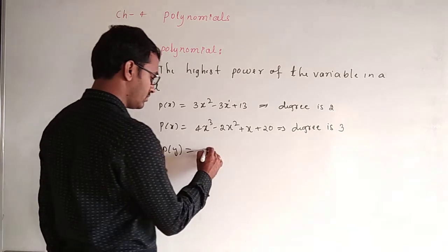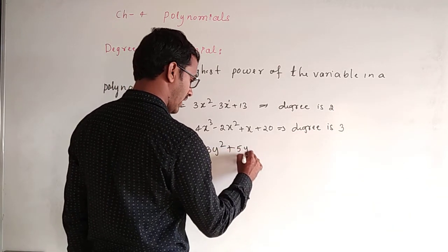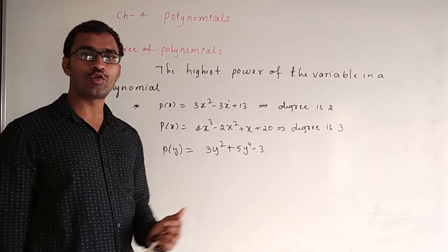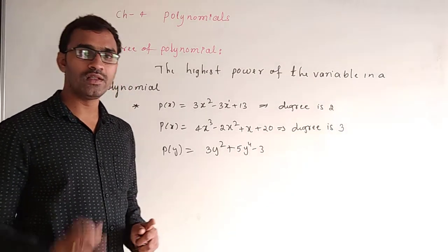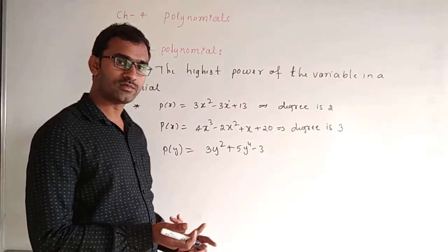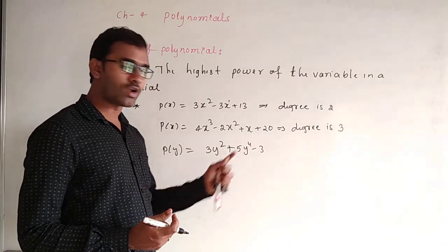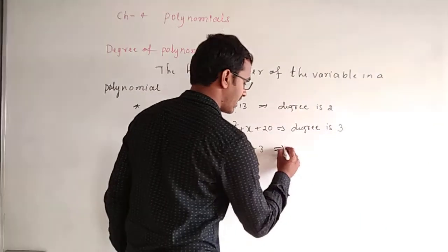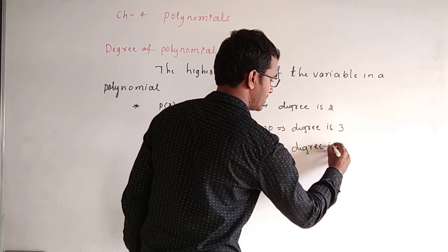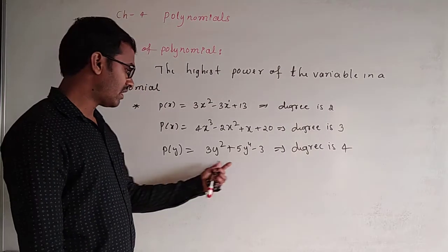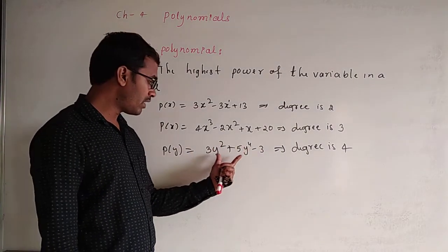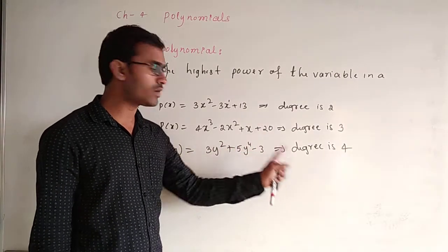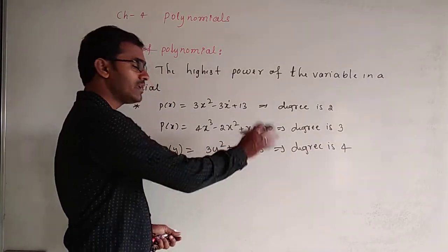Another example: P(y) = 3y² + 5y⁴ − 3. This is also a polynomial. The variable is y. The powers of y are 2 and 4. Comparing 2 and 4, the highest power is 4. Therefore, the degree of this polynomial is 4.